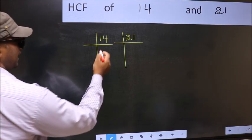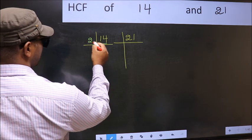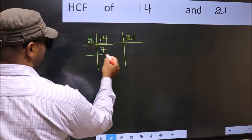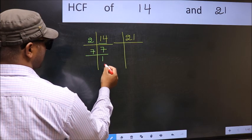Next, here we have 14. 14 is 2 times 7 is 14. Now 7 is a prime number so 7 times 1 is 7.